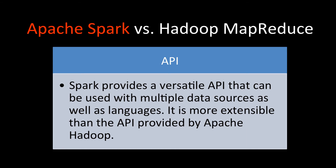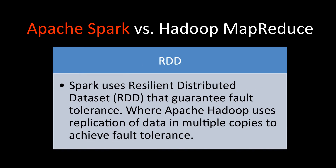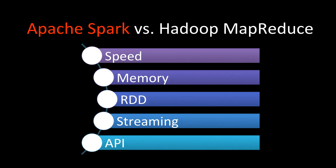Since Spark is quite new, it provides a versatile API that can be used with multiple data sources and languages like R, Scala, and Java, and can connect to Hive data sources. Spark's API is much more extensible than what Apache Hadoop provides. To reiterate, the main differences between Apache Spark and Hadoop MapReduce are API, streaming, RDD, memory, and speed.